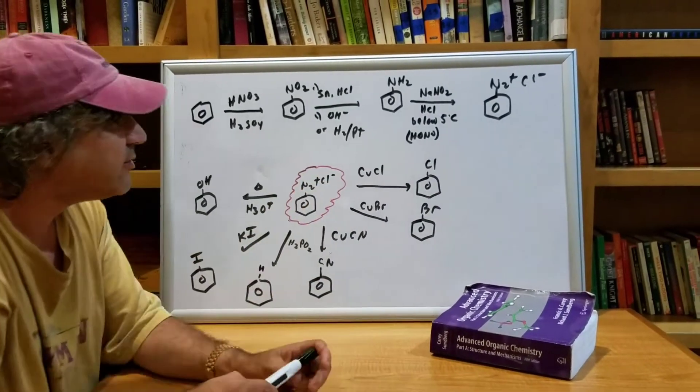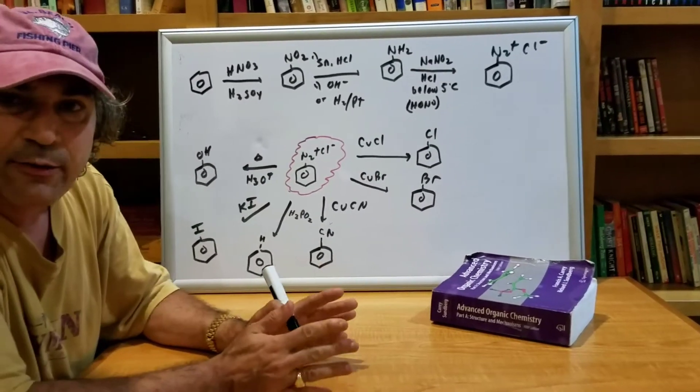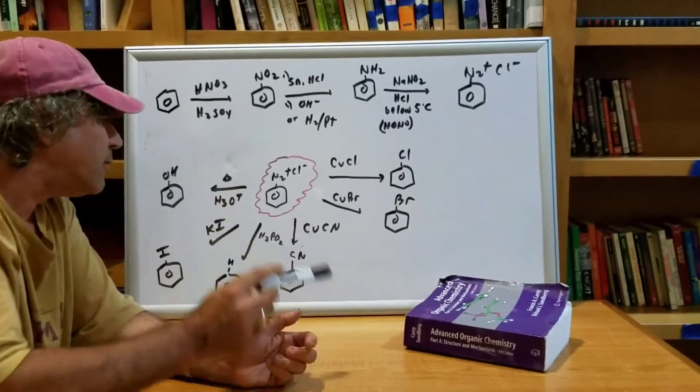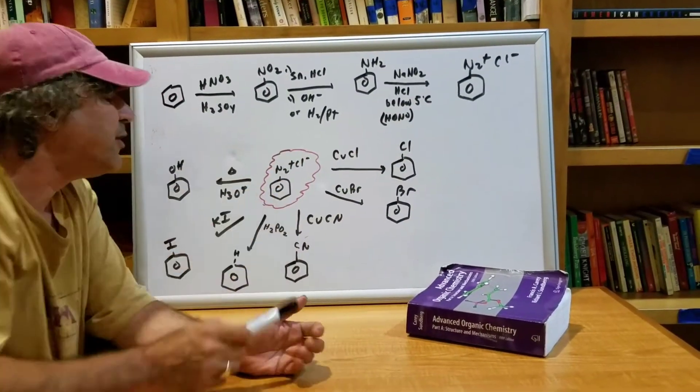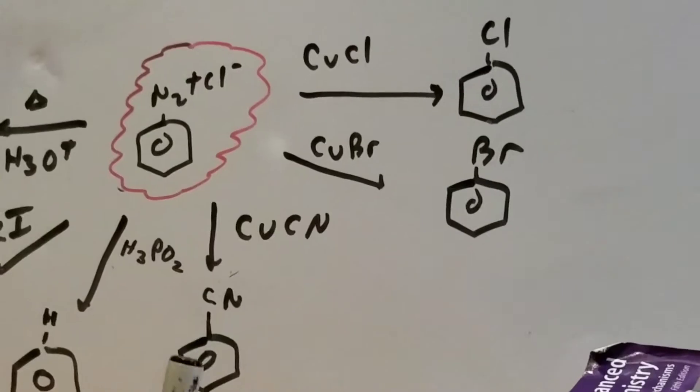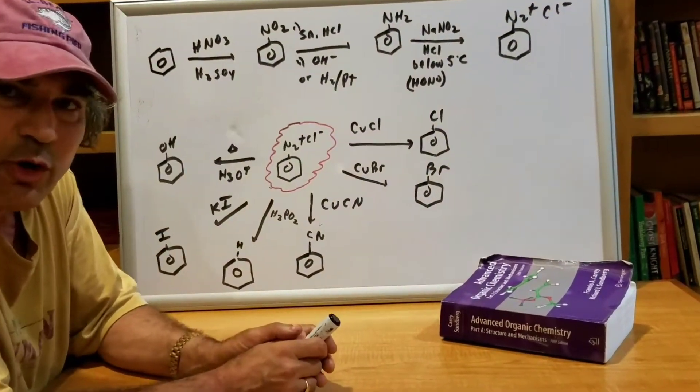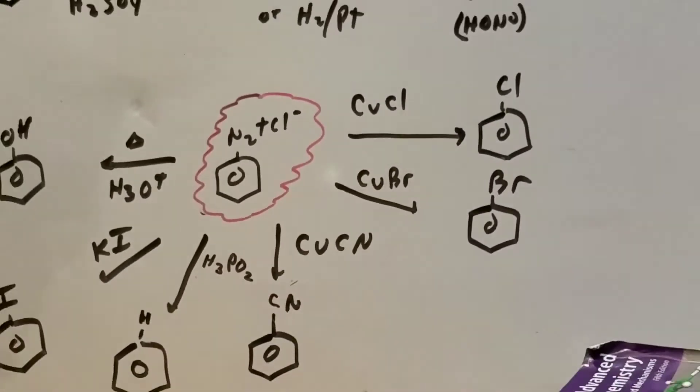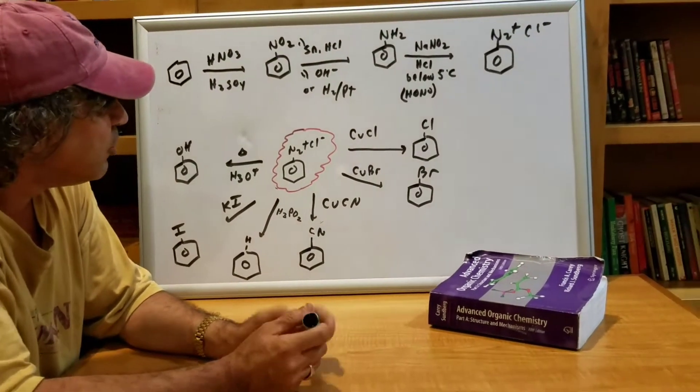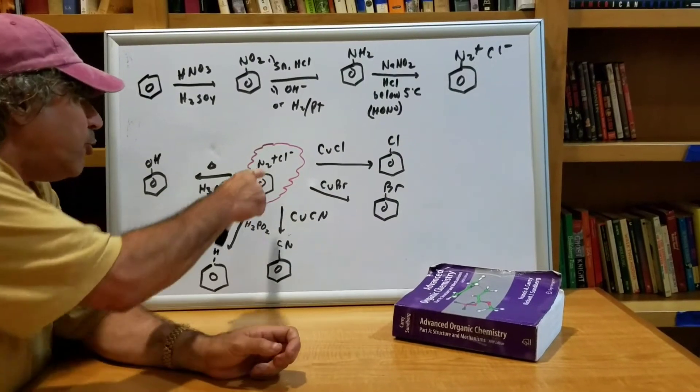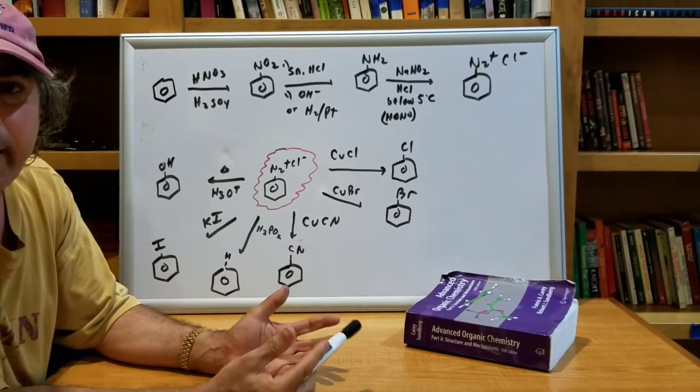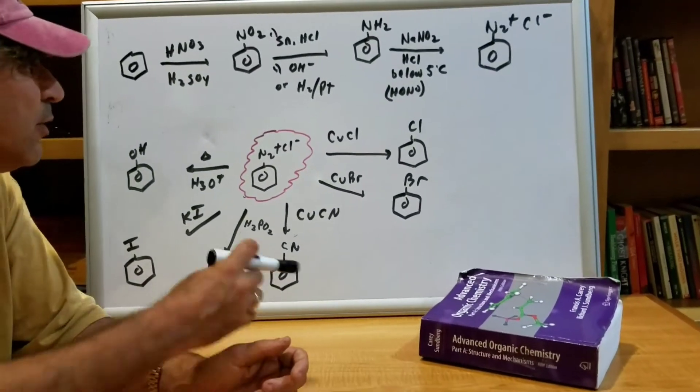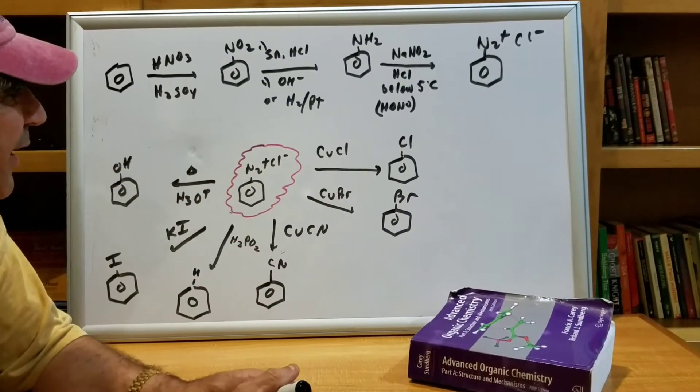Once we make the diazonium salt, there's a whole array of different chemical reactions that it could undergo. For example, let's review now. So I'm going to take this and we're going to put it here. If you treat the diazonium salt with CuCl or CuBr, we would put on a chlorine and a Br respectively. You can almost think of this N2 group, Cl minus as one big gigantic leaving group, sort of analogous to the SN2 process, where we kick one group out and we put another group in.